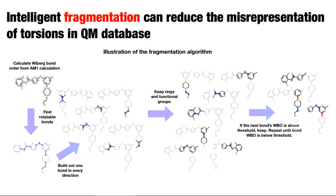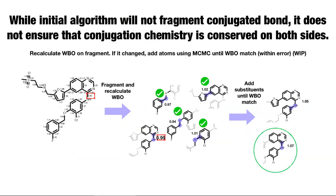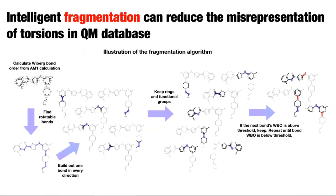The above fragmentation uses the Wiberg bond order for two things: first, to ensure we're not breaking conjugated systems; second, if we have a bond that's highly conjugated, we want to extend out around that central bond to the point where we don't lose that conjugation — which is slightly different from just making sure you're not fragmenting conjugated systems at each rotatable bond. This is still a work in progress.